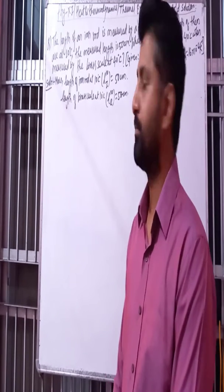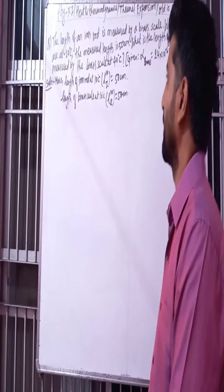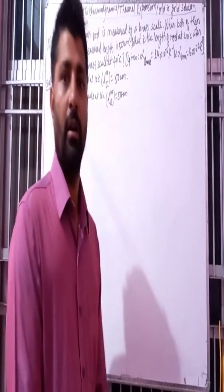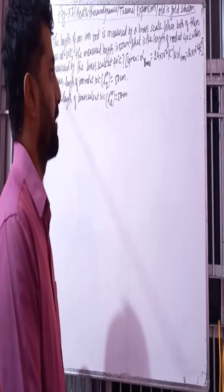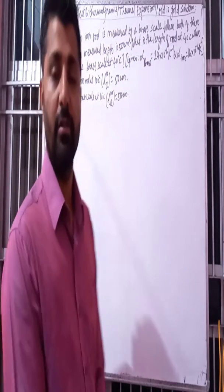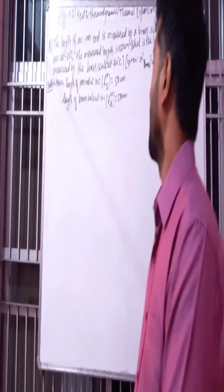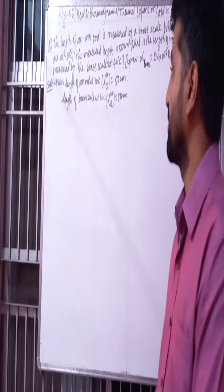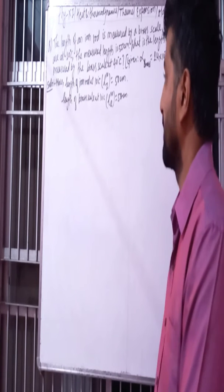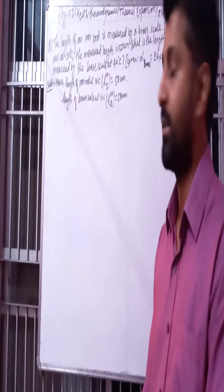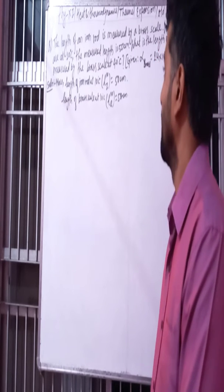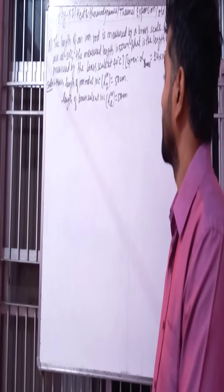Dear friends, I am going to talk about thermal expansion in this video. The length of an iron rod is measured by a brass scale. When both of them are at 10 degrees centigrade, the measured length is 50 cm. The temperature is 10 degrees centigrade and the length is 50 cm.